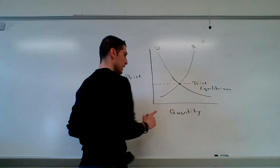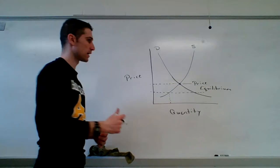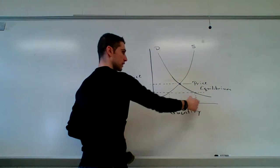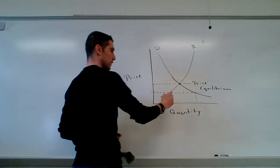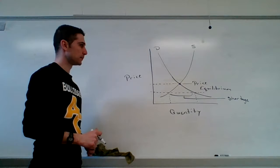If they set the price too low, notice what happens. The quantity supplied is over here. It's not as profitable, so they're not willing to sell as much. But the quantity demanded on this demand curve is all the way up here, considerably higher. That's because people are like, oh, it's cheap. I'm going to buy it. Therefore, this area is what is referred to as a shortage.